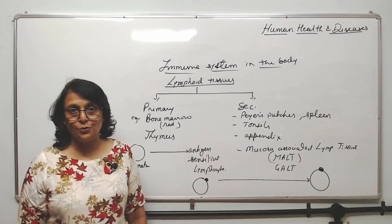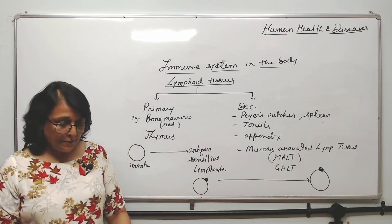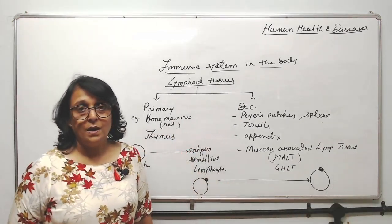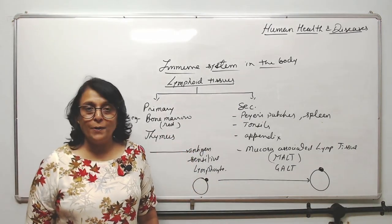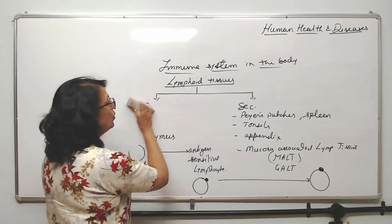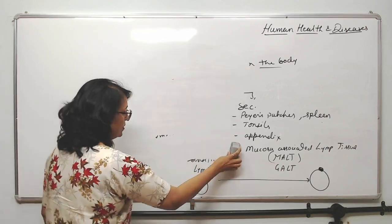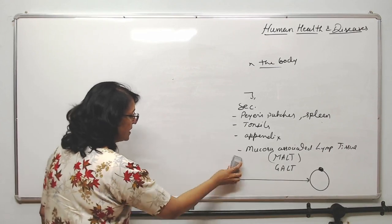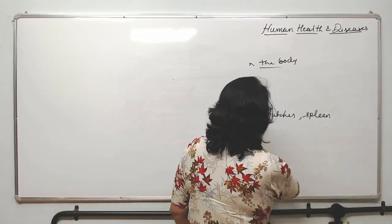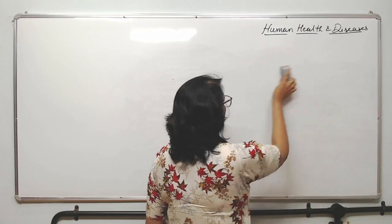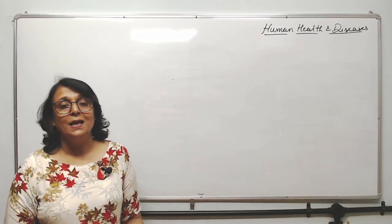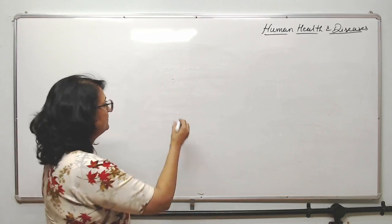Sometimes our immune system doesn't work properly and we suffer from autoimmune disorders. There are certain diseases called autoimmune diseases, and here what exactly happens is our own cells become antigenic.